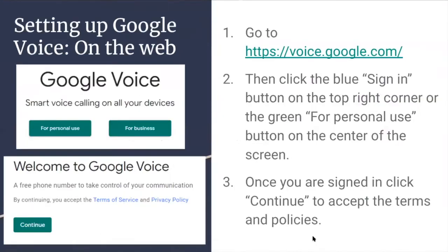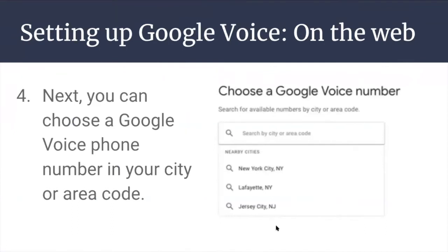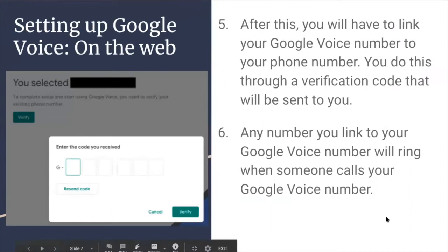To set up Google Voice on the web, go to voice.google.com and click the blue sign-in button on the top right corner, or the green "For Personal Use" button in the center of the screen. Once signed in, click Continue to accept the terms and policies. Next, choose a Google Voice phone number in your city or area code. You will then link your Google Voice number to your existing phone number through a verification code. Any number you link will ring when someone calls your Google Voice number.